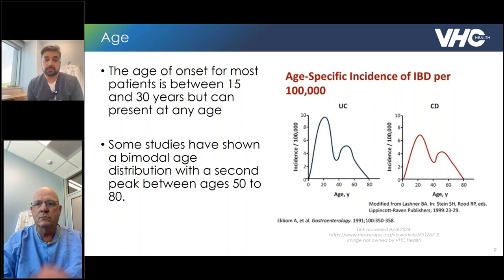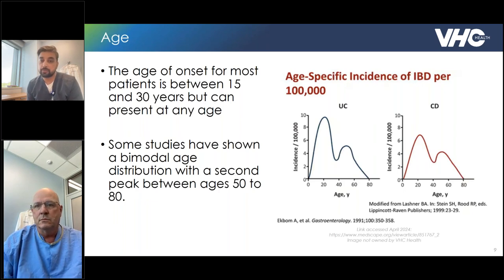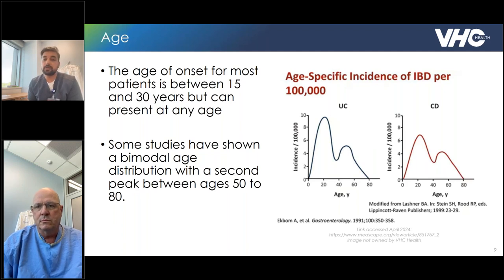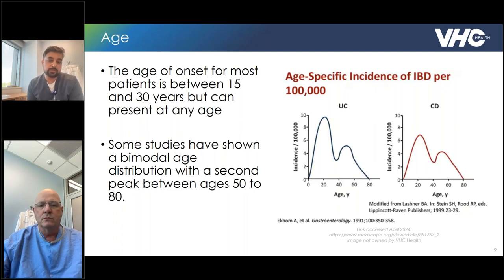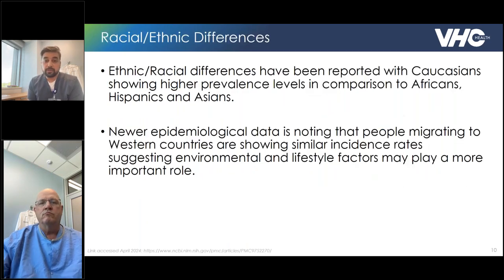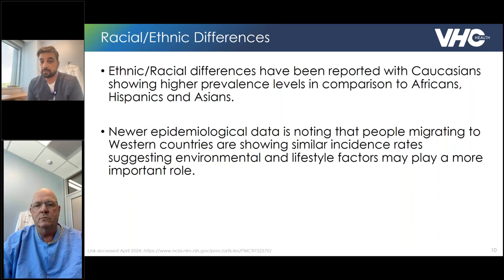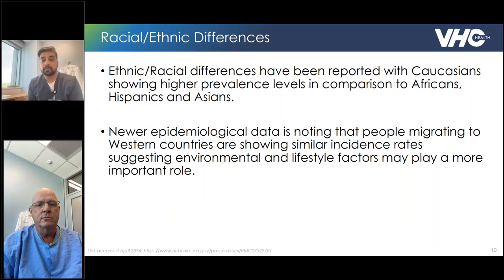At what age does this condition occur? The highest peak is usually in younger populations, from ages 15 to 30. But the reality is that we are seeing IBD start up at any age group. Some studies suggest a bimodal age distribution, where the condition dips in the 20s, 30s, and 40s, but a second peak occurs between the ages of 50 and 80. There are also ethnic and racial differences. Caucasians have shown higher prevalence compared to Africans, Hispanics, or Asians. But newer data shows that people migrating to Western, industrialized nations have a similar incidence rate, suggesting that environment and lifestyle play a major role.